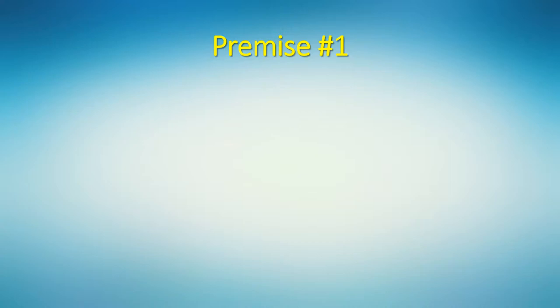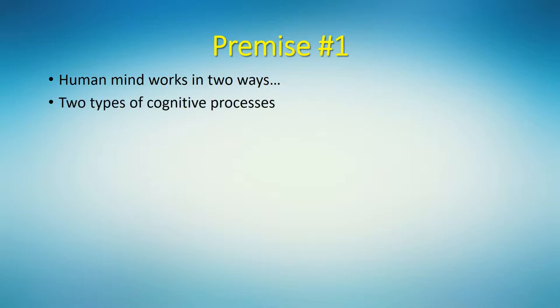Let's start with the first premise. A human mind works in two ways, or we can say that cognitive processes can be performed in two ways: in an automatic way and in a controlled way. We can also say that a mind at a moment of time can be either in an automatic mode or in a controlled mode.